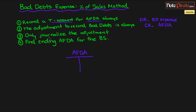Rule three: only journalize the adjustment. Sometimes we have a beginning balance of Allowance for Doubtful Accounts, and we'll have the adjustment, and sometimes we'll have a write-off and a recovery of a receivable — but you only want to record the adjustment for the estimate when asked to record Bad Debt Expense for the percentage of sales method. You record debit Bad Debt Expense and credit AFDA for that estimate of the revenues or sales you think will become uncollectible.